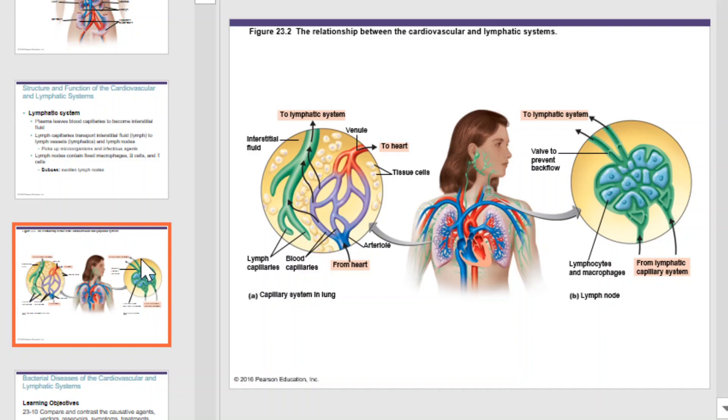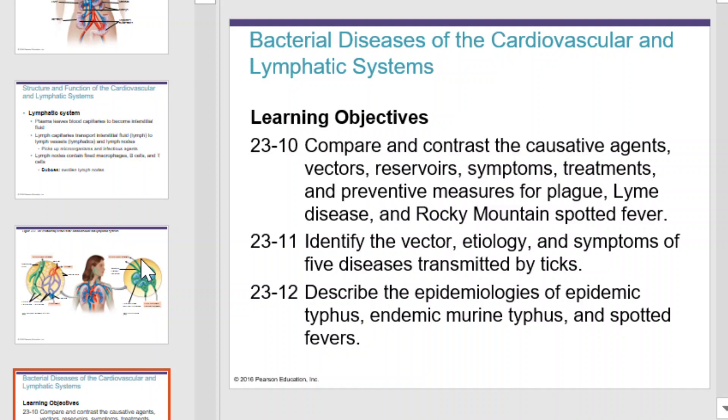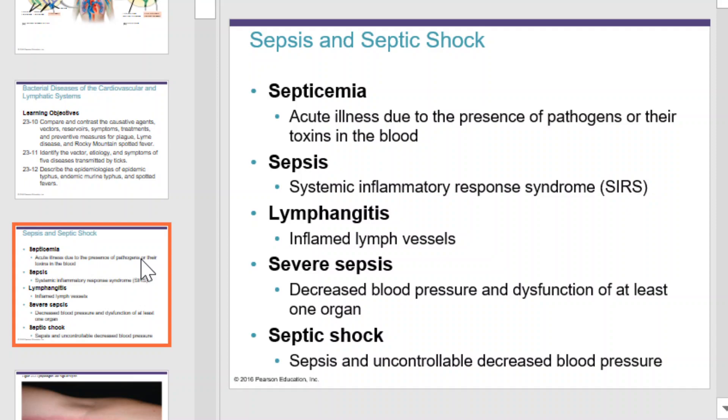Next, we'll examine bacterial diseases of the cardiovascular and lymphatic system. As we begin, please note that there are a few vocabulary terms that you should be familiar with: septicemia, sepsis, lymphangitis, severe sepsis, and septic shock.